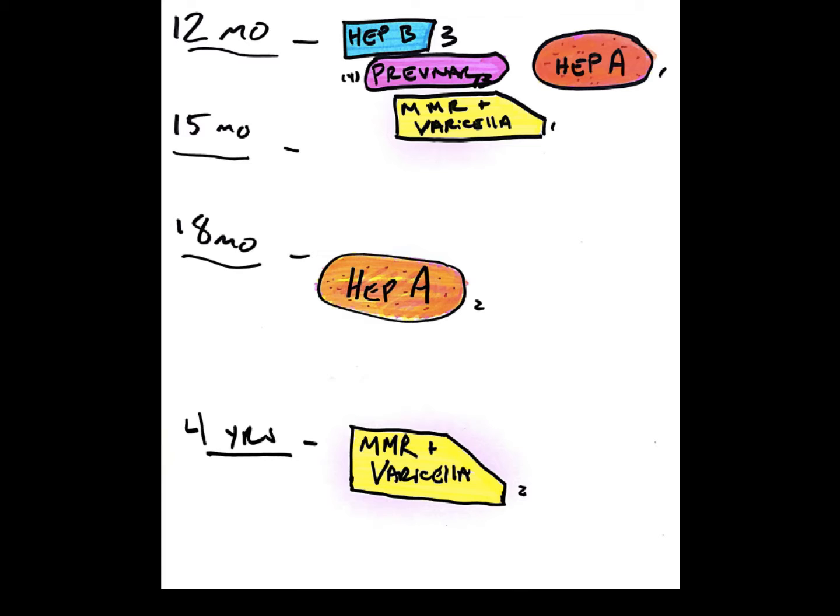Hep A is concluded at the end of this six-month period, so at 18 months. And MMR and varicella are completed at the four-year vaccination. So there's two years, actually three years between the first and last dose of the MMR and varicella.